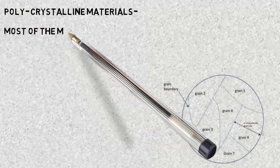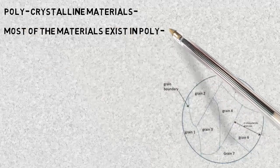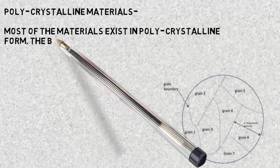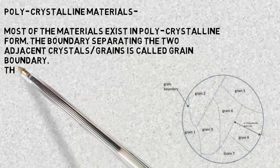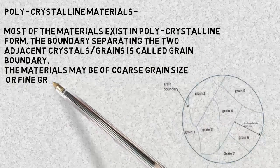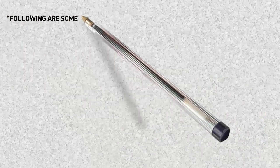Second is polycrystalline materials. Most of the materials exist in polycrystalline form. The boundary separating two adjacent crystals or grains is called grain boundary. The materials may be of coarse grain size or fine grain size.